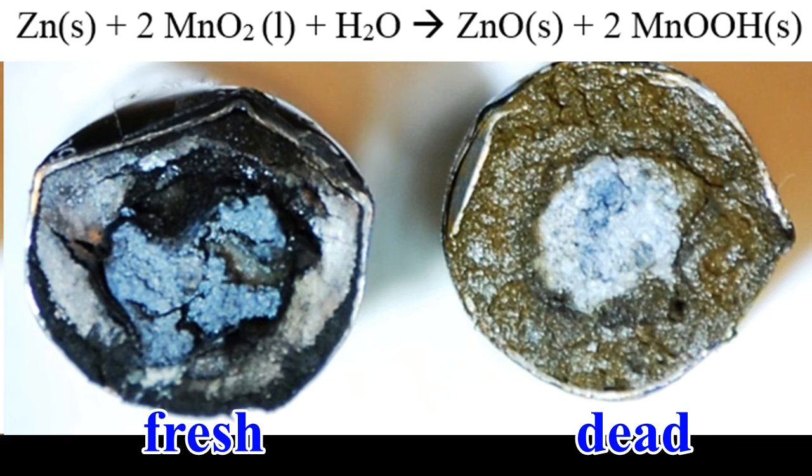At the top of the screen you can see the chemical equation that describes this chemical reaction. A fresh battery will contain zinc metal, which is silvery gray in color, manganese oxide, which is black in color, and water.